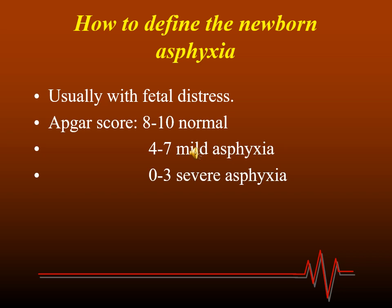After delivery, neonatal asphyxia is usually detected through the APGAR score. This depends on different parameters including heart rate, breathing rate, reflexes, tone, and color of the body. An APGAR score of 8 to 10 is normal; 4 to 7 indicates mild asphyxia; 3 or less indicates severe asphyxia.